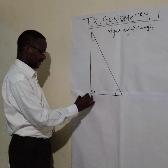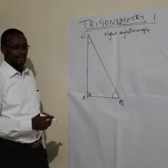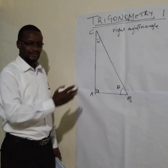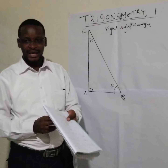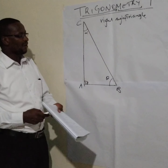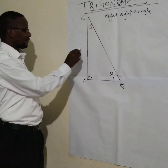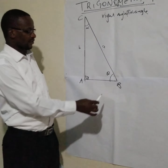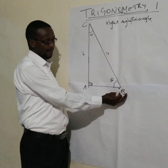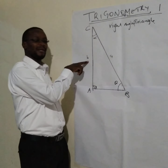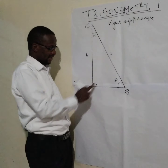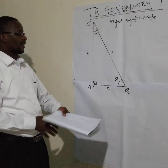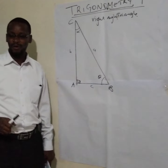Assuming we have a triangle here — A, B, C — we commonly use Greek letters for the angles. The sides are normally labeled on the opposite side of the angle. So if this is angle B, labeled by the capital letter, then the opposite side will be side B. If this is angle A, then this is side A. And if this is angle C, then this will be side C. So in this triangle we normally relate the side to the angle.